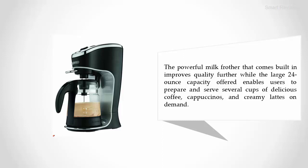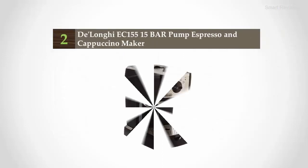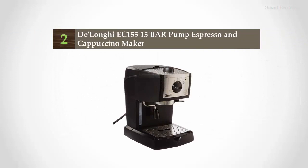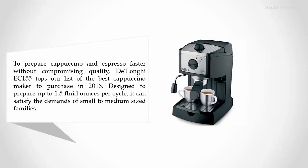Nearing the top of our list at number 2: DeLonghi EC155 15-Bar Pump Espresso and Cappuccino Maker. To prepare cappuccino and espresso faster without compromising quality, the DeLonghi EC155 tops our list of best cappuccino makers to purchase in 2016. Designed to prepare up to 1.5 fluid ounces per cycle, it can satisfy the demands of small to medium-sized families.